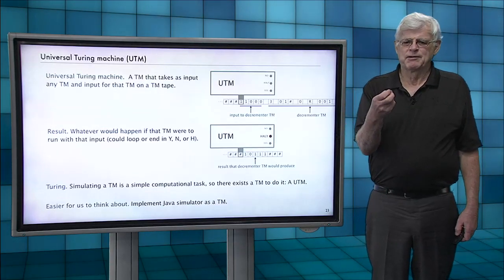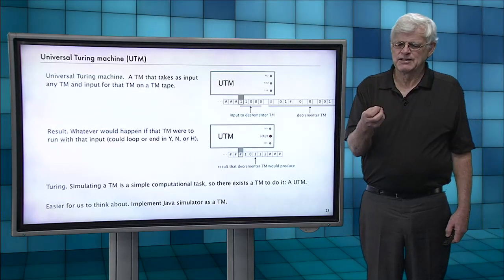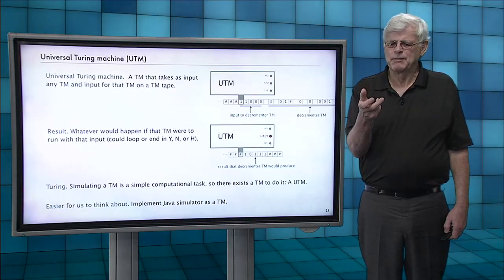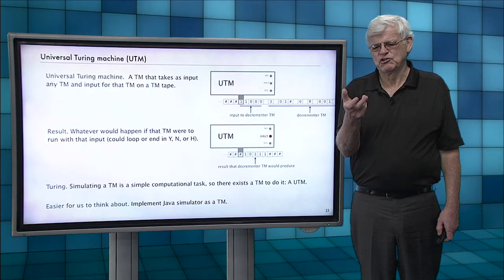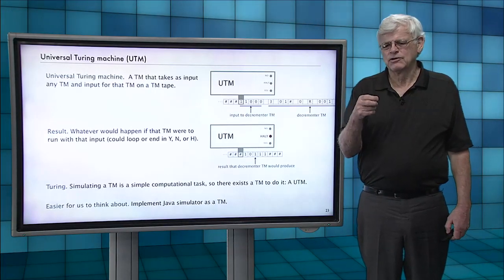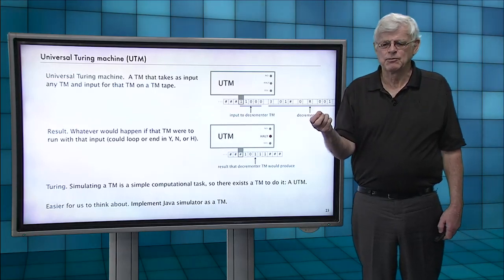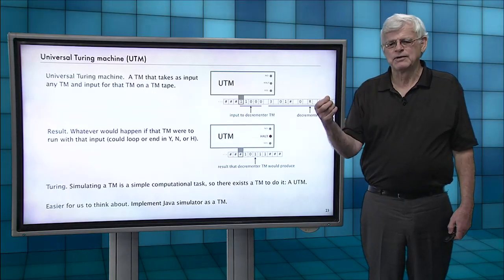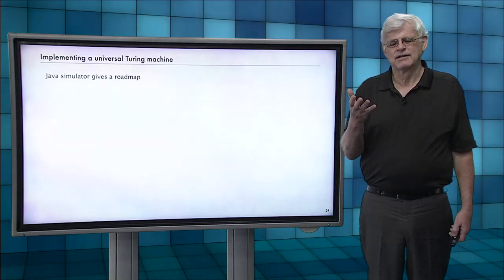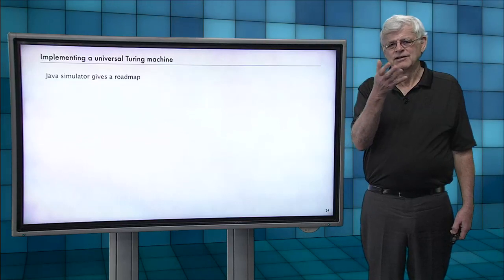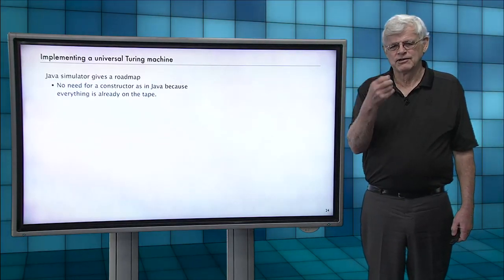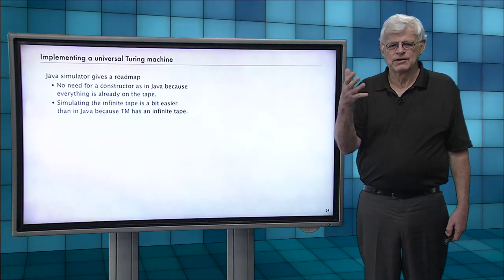Maybe an easier way to think about it is look at everything that our Java simulator does. And each piece of it, think about building a Turing machine, a piece of a Turing machine that could do that. Really, often all we're doing is going and looking up in a table, what state should I go to next and so forth. It's quite a simple computational task. Our simulator gives a road map for it. We don't have to build a constructor because everything's already on the tape.